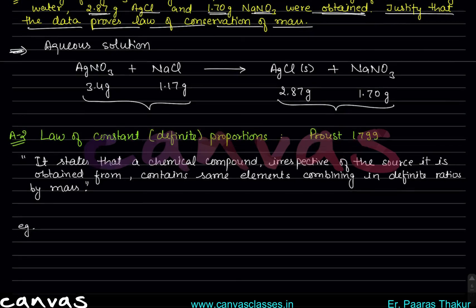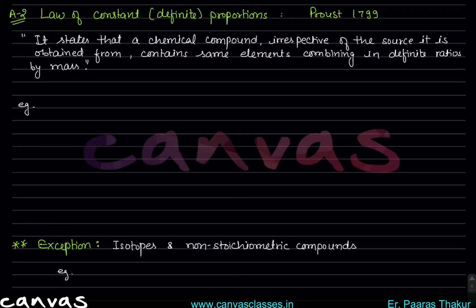Next is the law of constant or definite proportion. This was given by Proust in 1799. It is a simple law — you don't need to memorize all these laws; they can be understood with common sense. Read the definition once, and as we solve problems, it will become clearer exactly what to do.